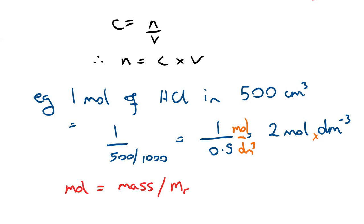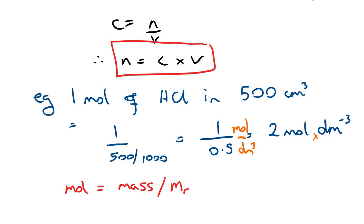That's how we work out the concentration of a solution. It's always worthwhile converting something into the number of moles of a substance, especially in the next video when we talk about reacting masses. It's always important to work out the number of moles of a substance that you have, and we can do that using concentration and this formula here, where n is the number of moles, c is the concentration, and v is the volume.